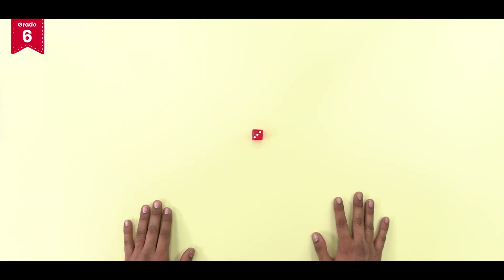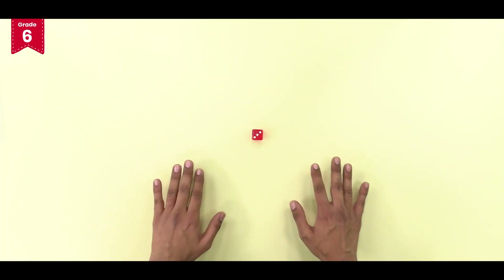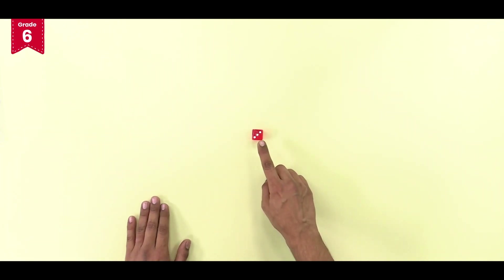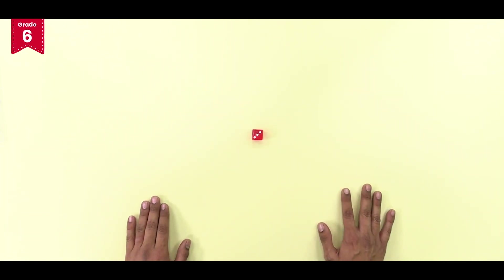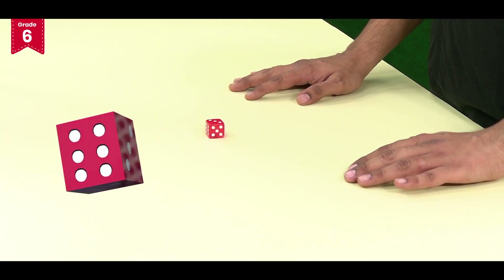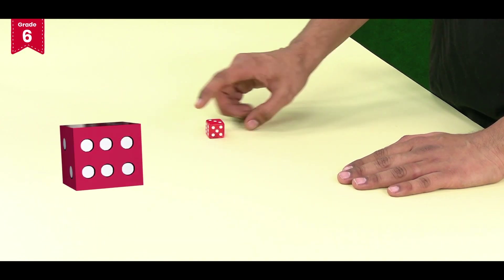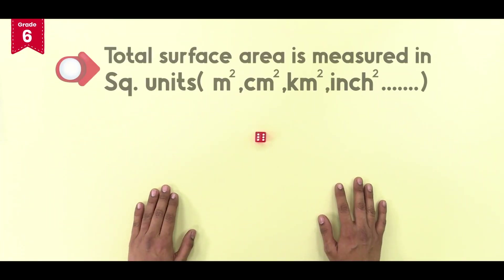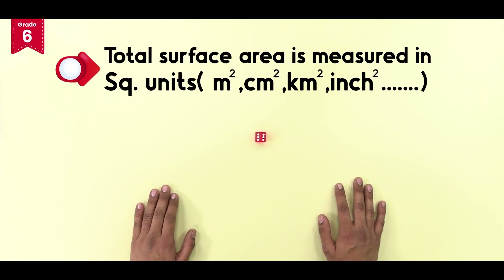Let us first learn to measure the total surface area of one die. A die is in the shape of a cube. It has six flat square faces. The total surface area is measured in square units.